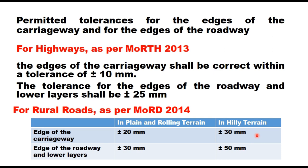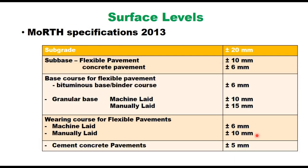Control of horizontal alignment is important to get the correct width of the road after construction. Surface levels are taken for each layer starting with the subgrade, and these levels are compared with the longitudinal and cross profile of the road as shown on the drawing.